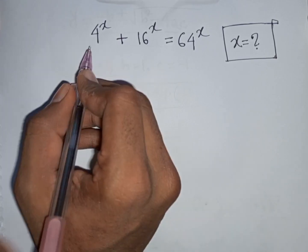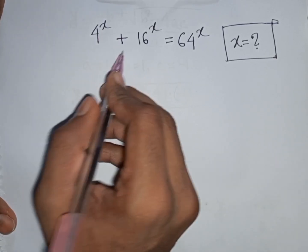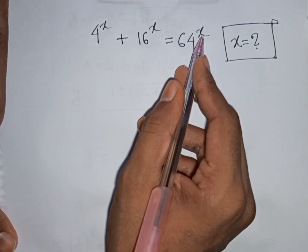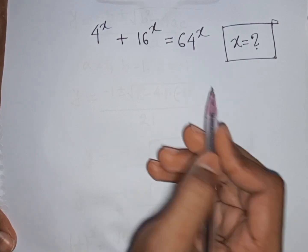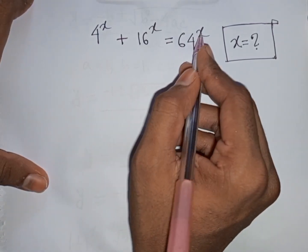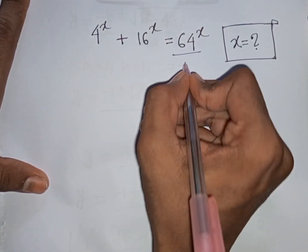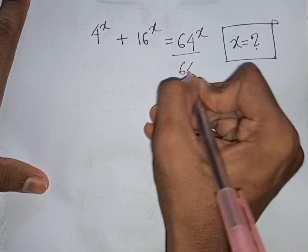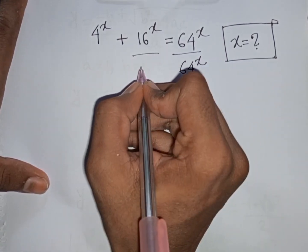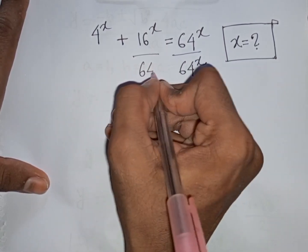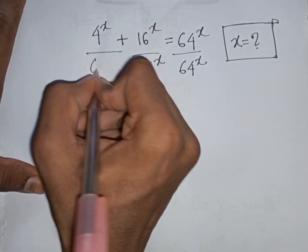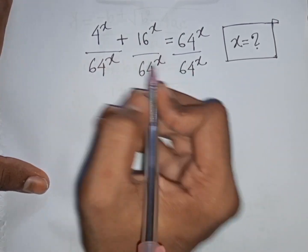How to solve 4^x plus 16^x is equal to 64^x. Find the value of x. First, we divide both sides by 64^x.